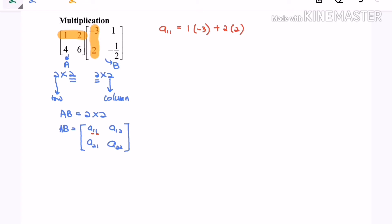So now we are focusing on A12, meaning that first row multiplied with the second column. So now we have to multiply with the second column. So A12 will equal 1 multiplied by 1 plus 2 multiplied by negative 1/2.